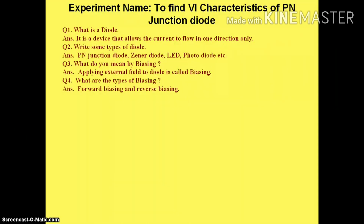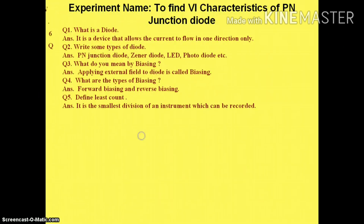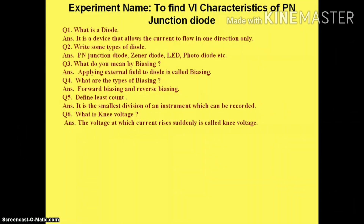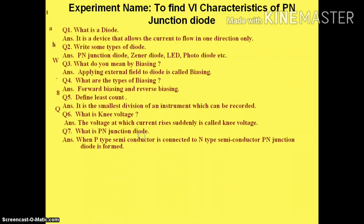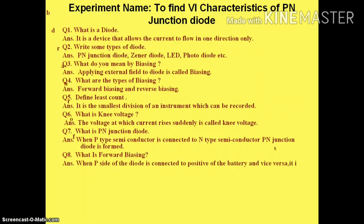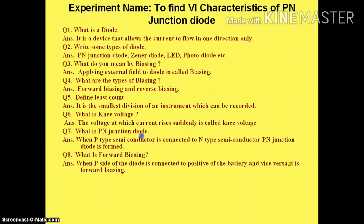There are two types of biasing: forward biasing and reverse biasing. Next: define least count. It is the smallest division of an instrument which can be recorded. Next question: what is knee voltage? The voltage at which the current rises suddenly is called knee voltage. What is a PN junction diode? When a P-type semiconductor is connected to an N-type semiconductor, a PN junction diode is formed. What is forward biasing? When the P side of the diode is connected to the positive terminal of the battery, it is called forward biasing.